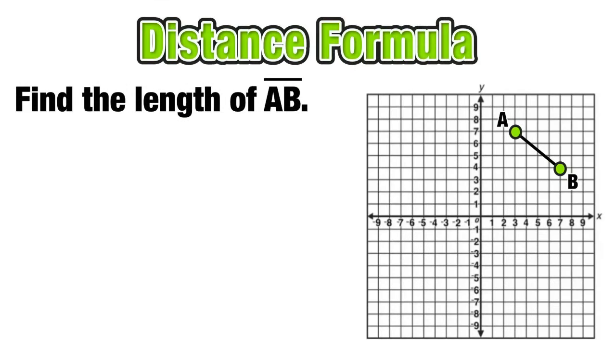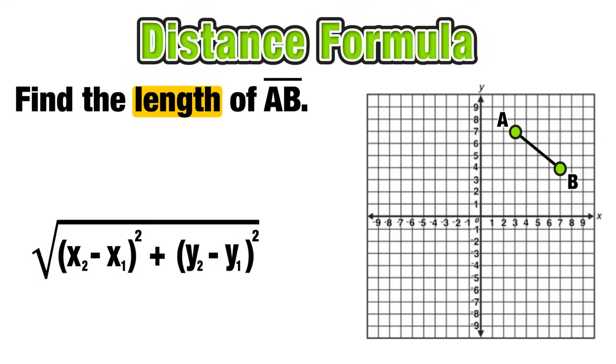Our first example calls for finding the length of line segment AB. Now when we see the word length, we should be tipped off to use the distance formula. First, we're going to need the coordinates of the endpoints A and B, with A at 3, 7, and B at 7, 4.